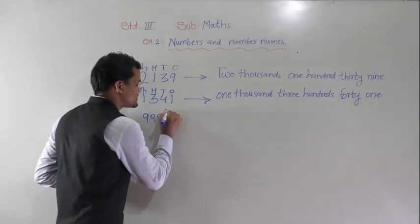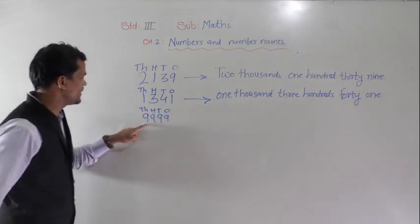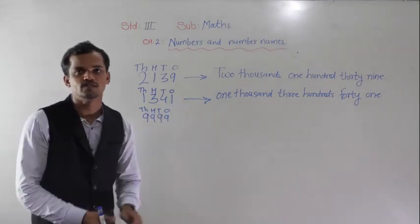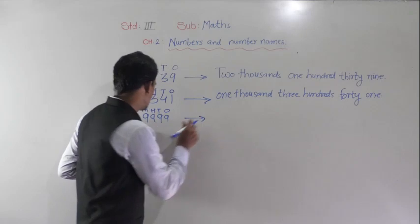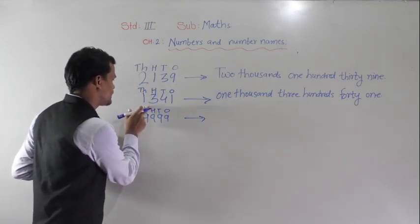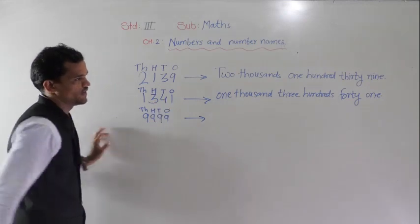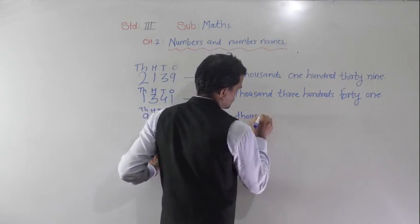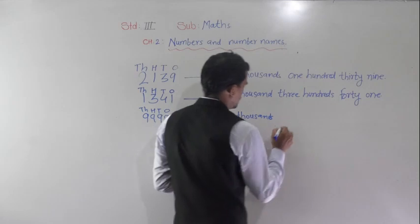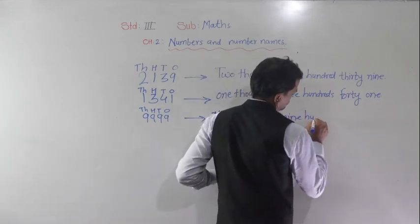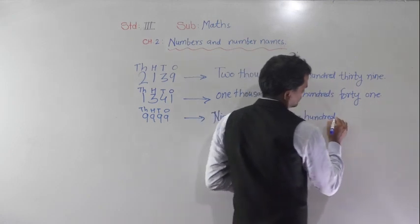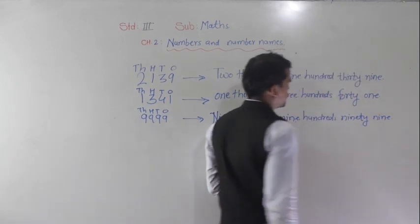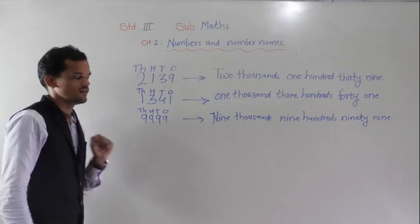How will you read this number? See here: 9 comes at the 1000s place, 9 comes at the 100s place, 9 comes at the 10s place, and 9 comes at the 1s place also. So read this number as 9999.